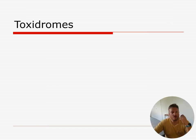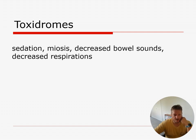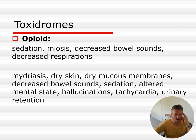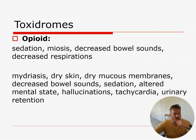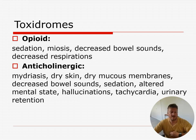Toxidromes: sedation, miosis, decreased bowel sounds, and decreased respirations — that's opioids. Mydriasis, dry skin, dry mucous membranes, decreased bowel sounds, sedation, and hallucinations — that's anticholinergics. This can happen with things you find in the garden like angels trumpet, which kids can get into.